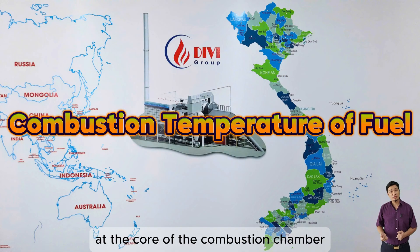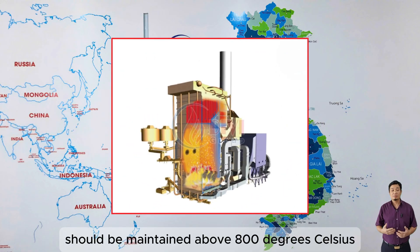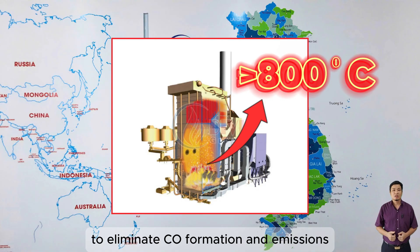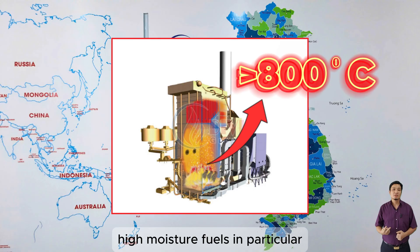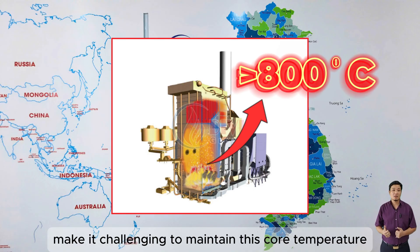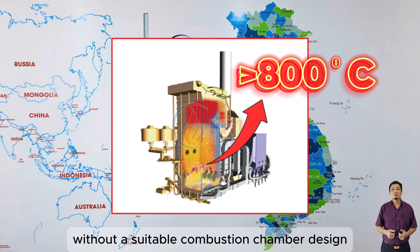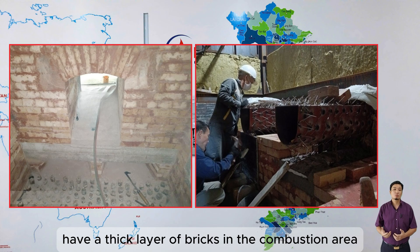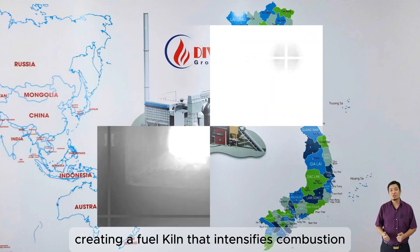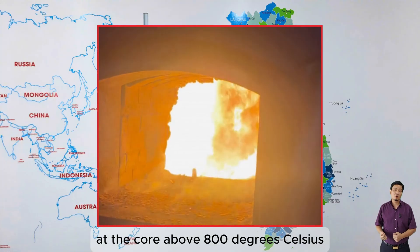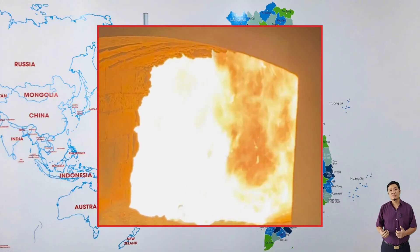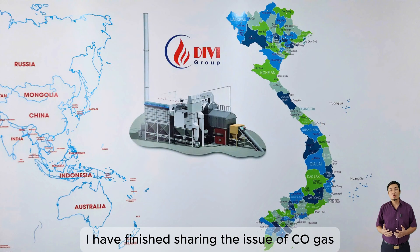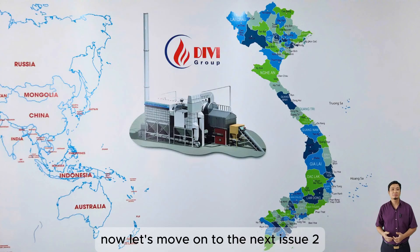Fourth, combustion temperature of fuel. The combustion temperature at the core of the combustion chamber should be maintained above 800 degrees Celsius to eliminate CO formation. High moisture fuels make it challenging to maintain this core temperature without a suitable combustion chamber design. This is why DV Group's boilers have a thick layer of bricks in the combustion area, creating a fuel kiln that intensifies combustion at the core above 800 degrees Celsius. Proper design ensures optimal combustion temperature. That concludes the issue of CO gas.